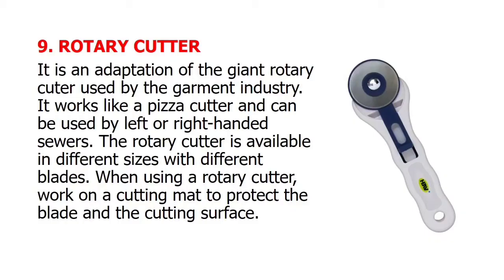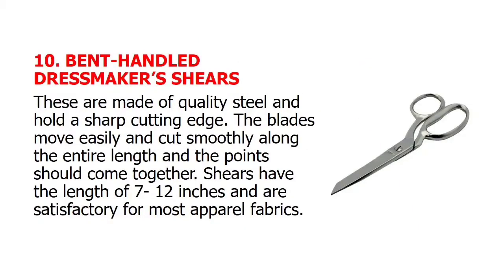Rotary cutter: it is an adaptation of the giant rotary cutter used by the garment industry. It works like a pizza cutter and can be used by left- or right-handed sewers. The rotary cutter is available in different sizes with different blades. When using a rotary cutter, work on a cutting mat to protect the blade and the cutting surface. And lastly, the bent-handle dressmaker shears: made of quality steel and hold a sharp cutting edge; the blades move easily and cut smoothly along the entire length and the points should come together. Shears have the length of 7 to 12 inches and are satisfactory for most apparel fabrics.